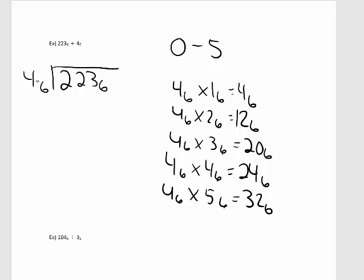4 does not go into 2, but 4 goes into 22 base 6 three times. 3 base 6 times 4 base 6 is 20 base 6. Subtract, that's 2. Bring down the next number, that's a 3. How many times does 4 base 6 go into 23 base 6? That's 3, because 20 base 6 is smaller than 23 base 6, but 23 base 6 is smaller than 24 base 6. So put 3.